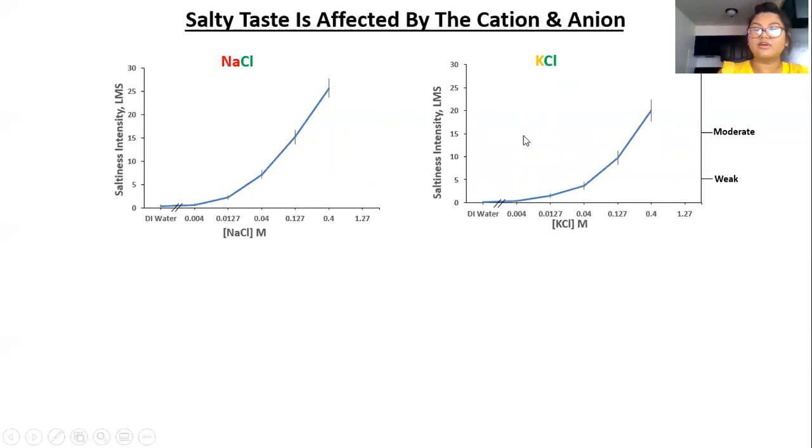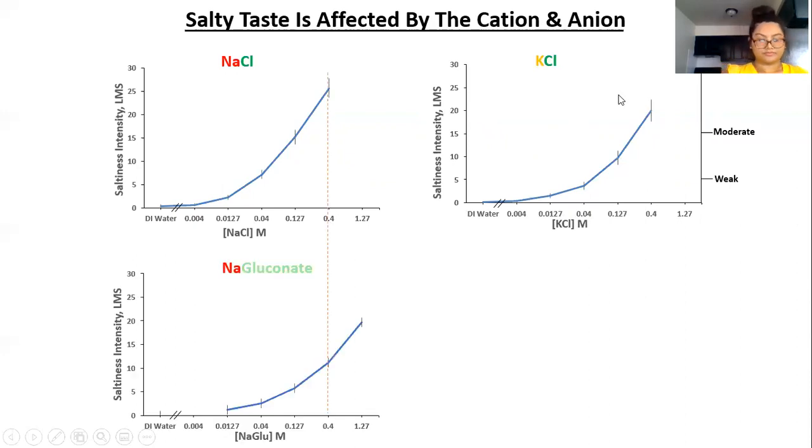Next, we have potassium chloride where the axes are labeled the same. But unlike sodium chloride, its increase is not as steep and it reaches just above moderate. We now have sodium gluconate and for both of our gluconates, we tested higher concentrations because we suspected that gluconate would not be as salty as chloride. But still, we can see at 0.4 molar, sodium gluconate is half as salty as sodium chloride.